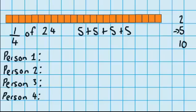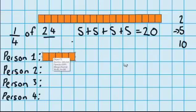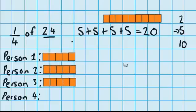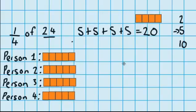So I can go 5 plus 5 plus 5 plus 5 — those are my 4 jumps. Now 5 plus 5 is 10, 10 plus 5 is 15, plus another 5 equals 20. So it's not quite the 24 that we have to share out, but it's a pretty good start. So I'm going to start by sharing out 5 blocks to each person: 5 for person 1, 5 for person 2, 5 for person 3, and 5 for person 4. And you can see that leaves me with 4 more blocks to share out.